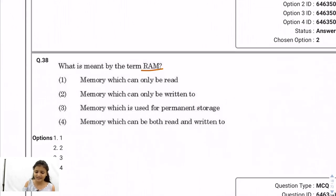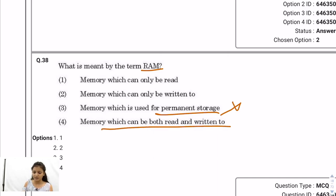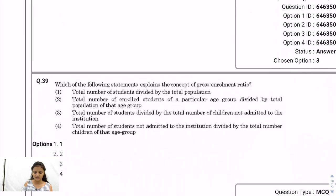Question 38: RAM stands for Random Access Memory. It is temporary storage, not permanent. Permanent storage is ROM — Read Only Memory. On RAM, data can be both read and written. So option 4 is the correct answer.